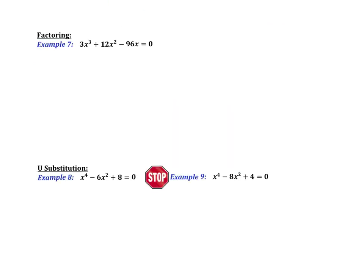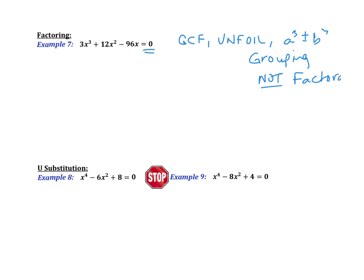Since we've already done a little bit of factoring, this is just a quick review. The first thing you always want to do is make sure you are setting equal to zero. Then think about GCF, FOIL, sum and difference of two cubes, and grouping — whatever you can use. And remember, if it is not factorable, you have to think about the quadratic formula. All those things have to be running through your mind.